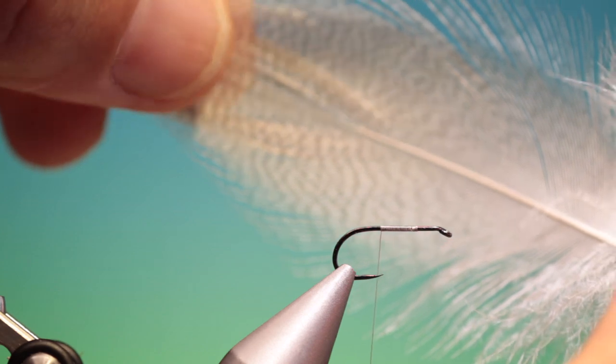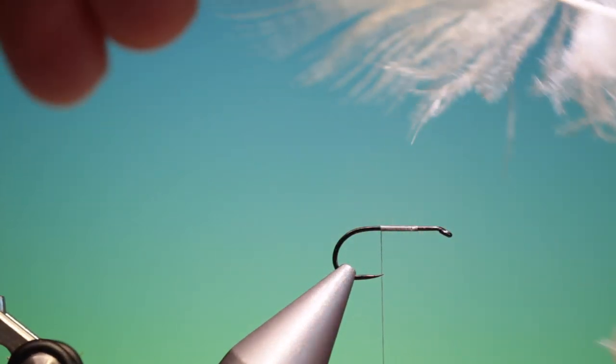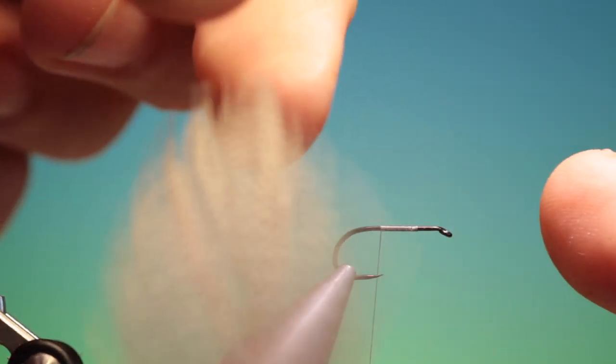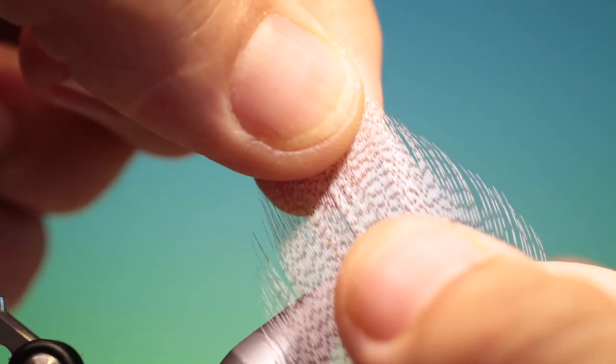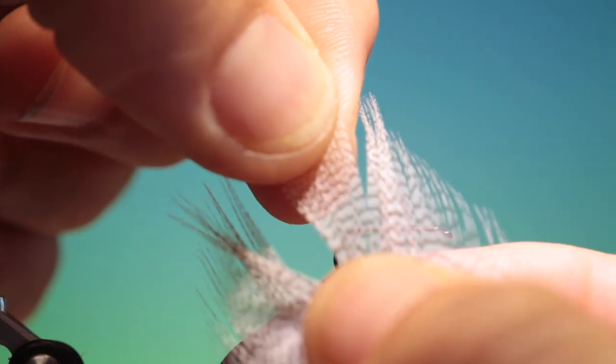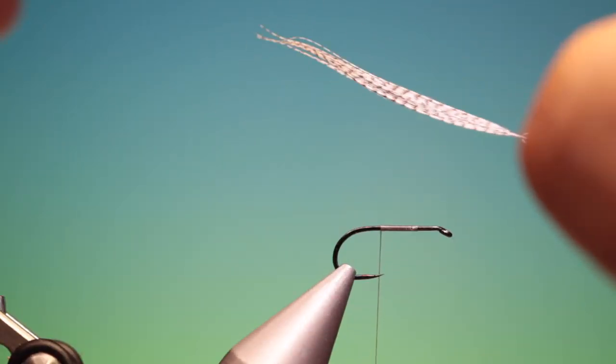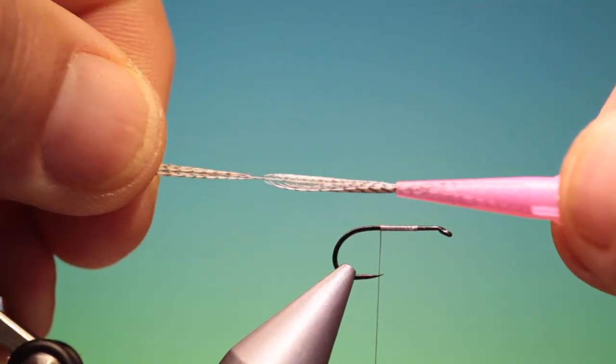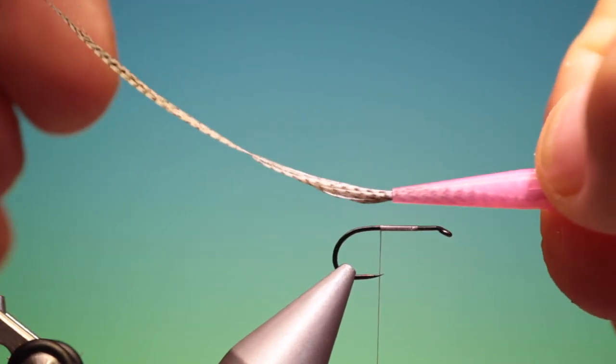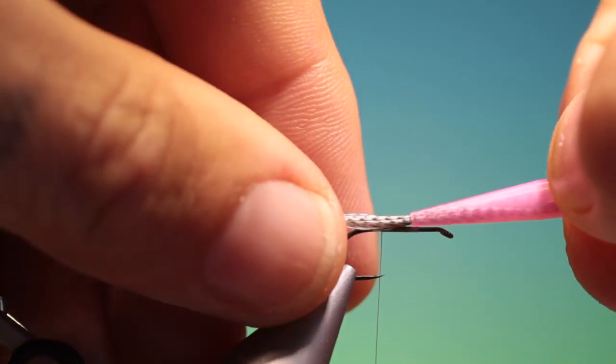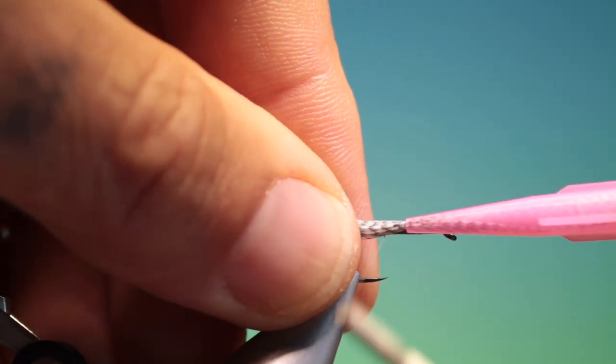We take a mallard hackle and strip off all this at the bottom. Then take hold of the point and separate the fibres out. Wet the tip, take a UV resin nozzle, put that in, and pull it through until it adopts the correct profile and size for the body you require.